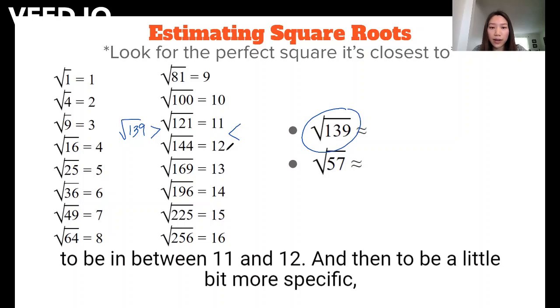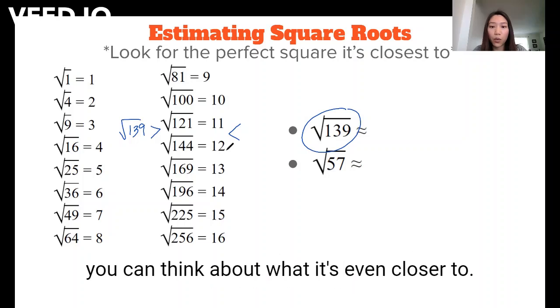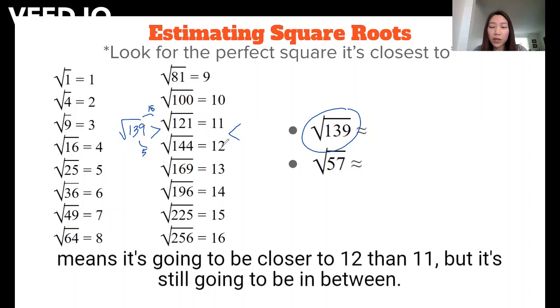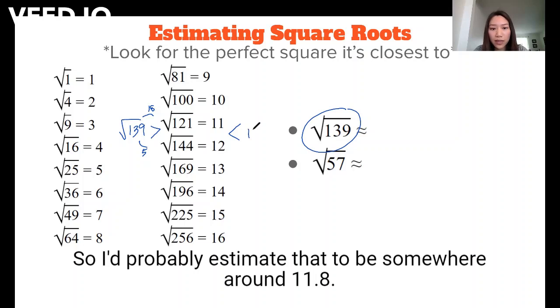And then to be a little bit more specific, you can think about what it's even closer to. So 139 is 5 away from 144 and 18 away from 121. So that means it's going to be closer to 12 than 11, but it's still going to be in between. So I probably estimate that to be somewhere around 11.8.